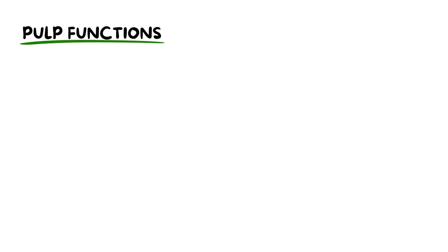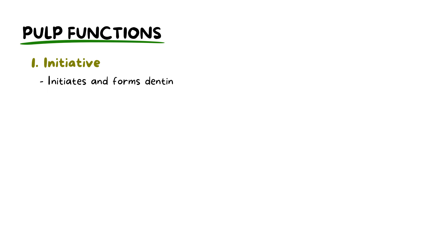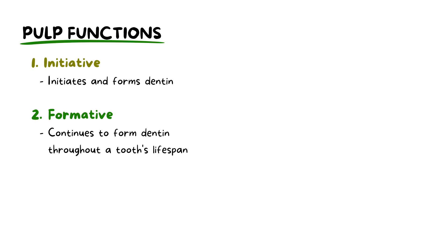Now that we've explored the structure and development of the dental pulp, let's delve into its vital functions. The dental pulp is not merely a passive tissue — it actively contributes to the health and integrity of teeth. Firstly, the dental pulp initiates and forms the dentine, the hard tissue that makes up the bulk of the tooth. During tooth development, or odontogenesis, it plays a pivotal role in laying down dentine matrix, contributing to the overall structure and strength of the tooth. As the tooth's architect, the dental pulp continues to form dentine throughout the tooth's lifespan, ensuring that dentine remains a dynamic tissue capable of responding to external stimuli or injury.